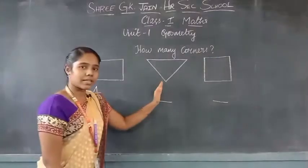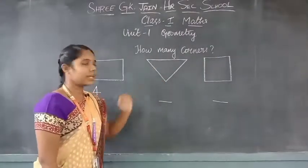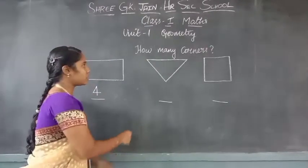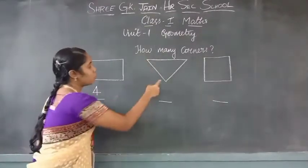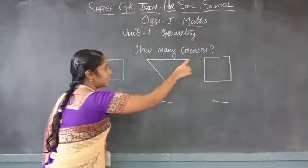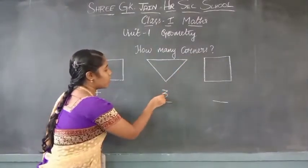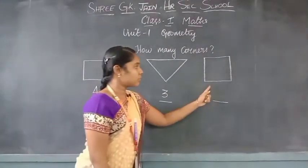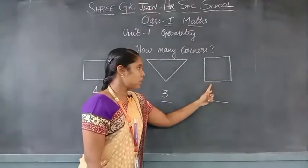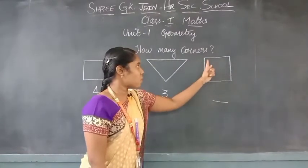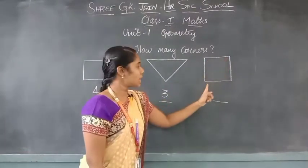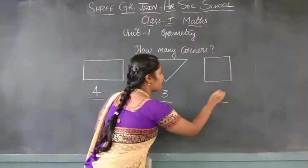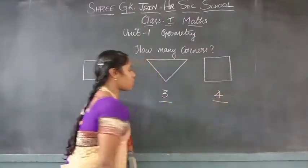Shall we move on to the next one? How many corners does this shape have? Shall we count? 1, 2, 3. So, 3 corners. Now we will see the corners of the next shape. Shall we count the corners? 1, 2, 3, 4. This shape is also having 4 corners.